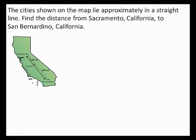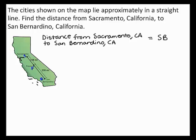The cities shown on the map lie approximately in a straight line. Find the distance from Sacramento, California to San Bernardino, California. First, label Sacramento as point S, Fresno as point F, and San Bernardino as point B. On the map, the distance from Sacramento to San Bernardino is equal to the length of segment SB. To find the length of segment SB, you can use the segment addition postulate. Point F is between points S and B. So, by the segment addition postulate, the length of segment SF plus the length of segment FB is equal to the length of segment SB.